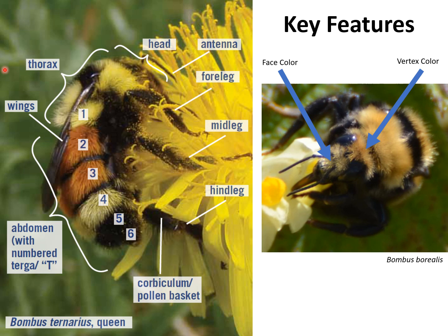After the head comes the thorax, or the middle portion of the bee. Wings and legs are attached to the thorax. The presence or absence of a corbicula, or pollen basket, on the hind legs is important for telling males from females and cuckoos from non-cuckoo bumblebees. For identification, the most important part of the thorax is the amount and shape of black. The thorax can be completely yellow, yellow with a small black dot, a black band, a large black area, or a black and yellow intermixed patch.